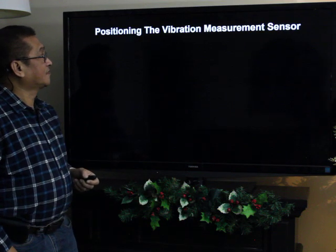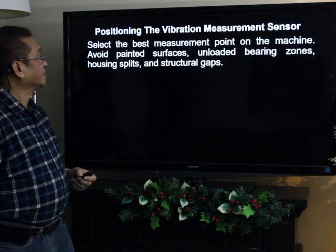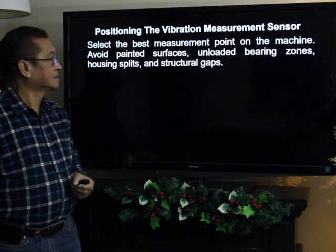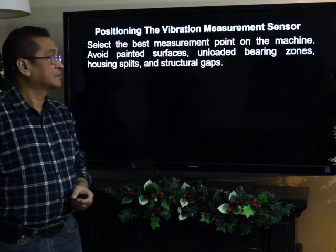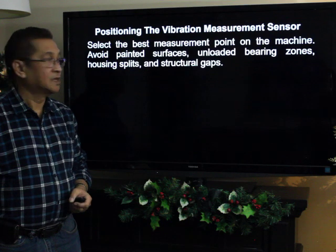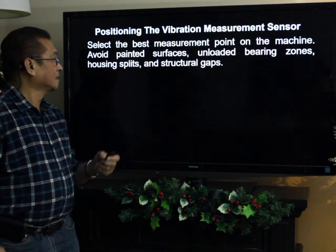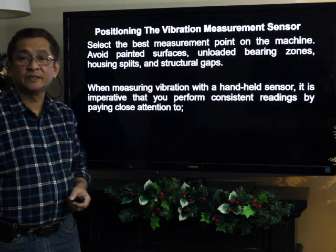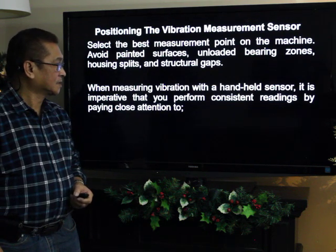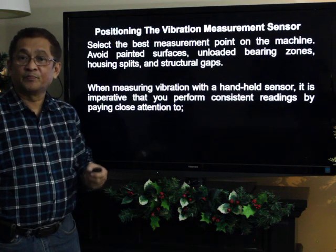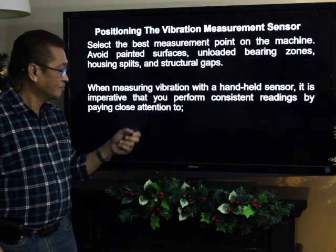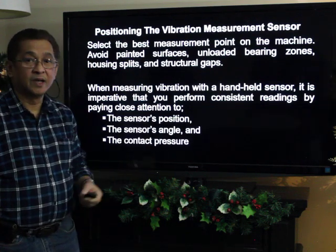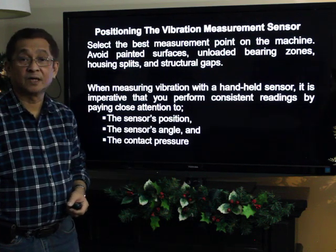Positioning the vibration measurement sensor: select the best measurement point on the machine. Avoid painted surfaces, unloaded bearing zones, structural gaps, and housing splits. When measuring vibration with a handheld sensor, it is important to perform consistent readings by paying close attention to the sensor's position, the sensor's angle, and contact pressure.